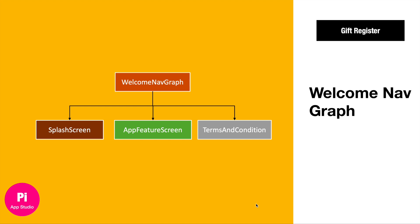In the splash screen, we show the first app launch. The app feature screen is where we educate or guide the user — these are the new features as part of this specific app. We have guidance there. Next, the terms and conditions: obviously the user has to accept these terms and conditions to proceed further.